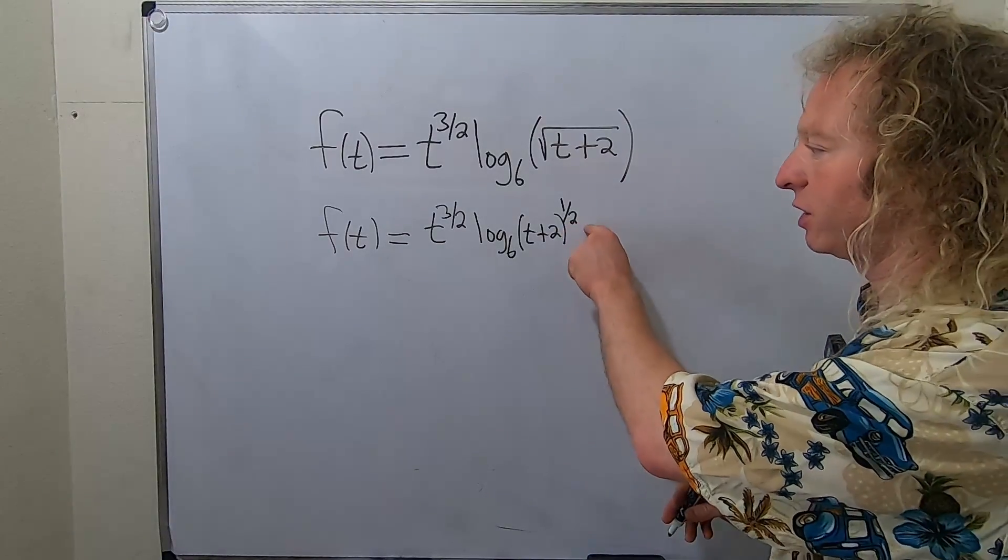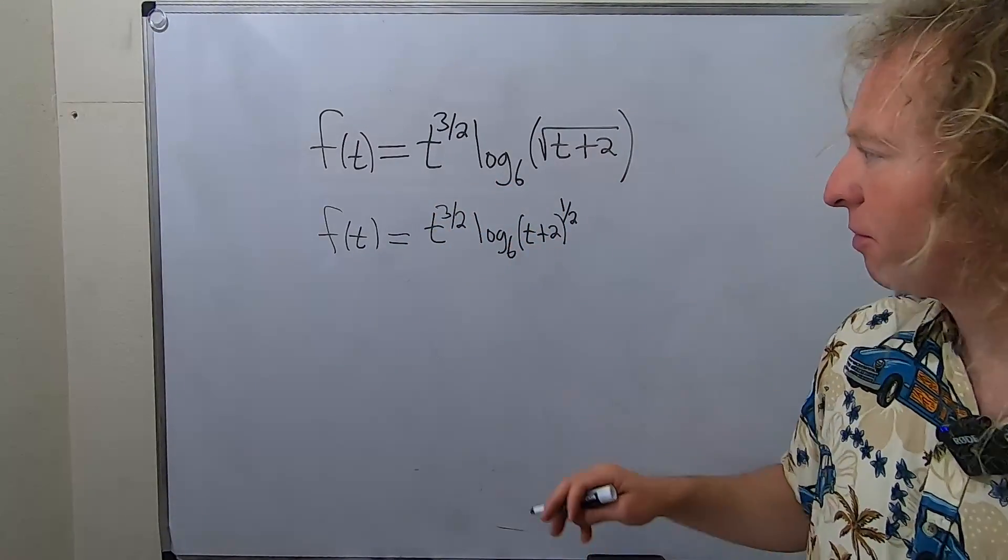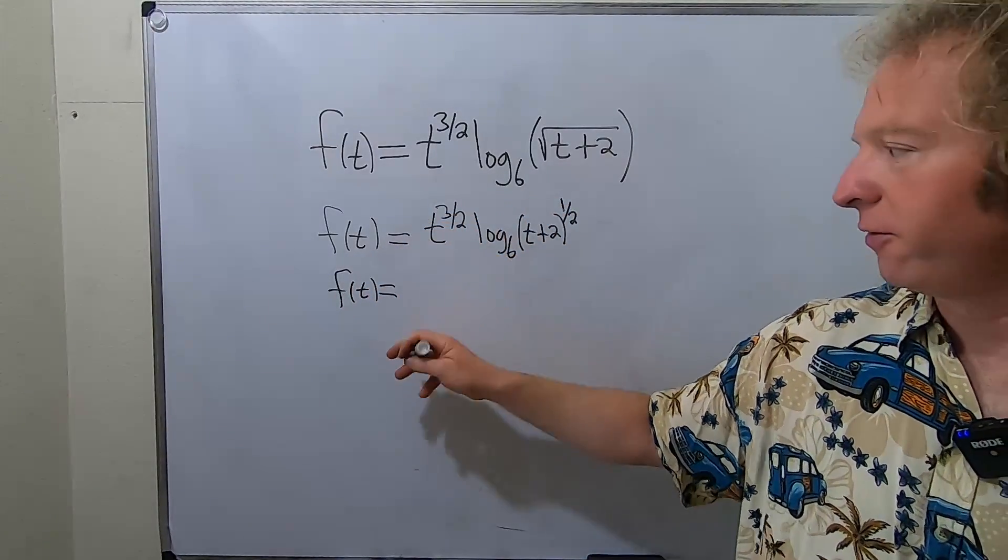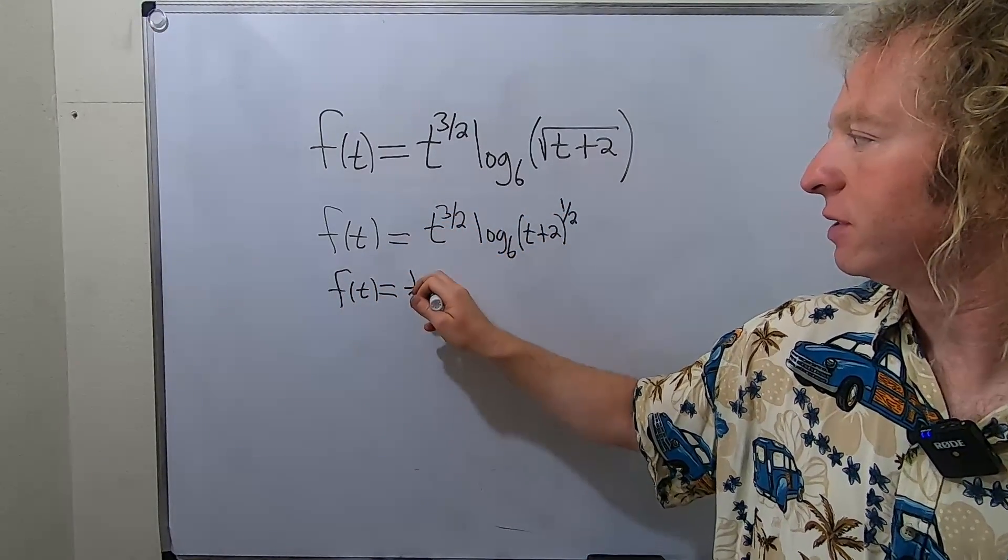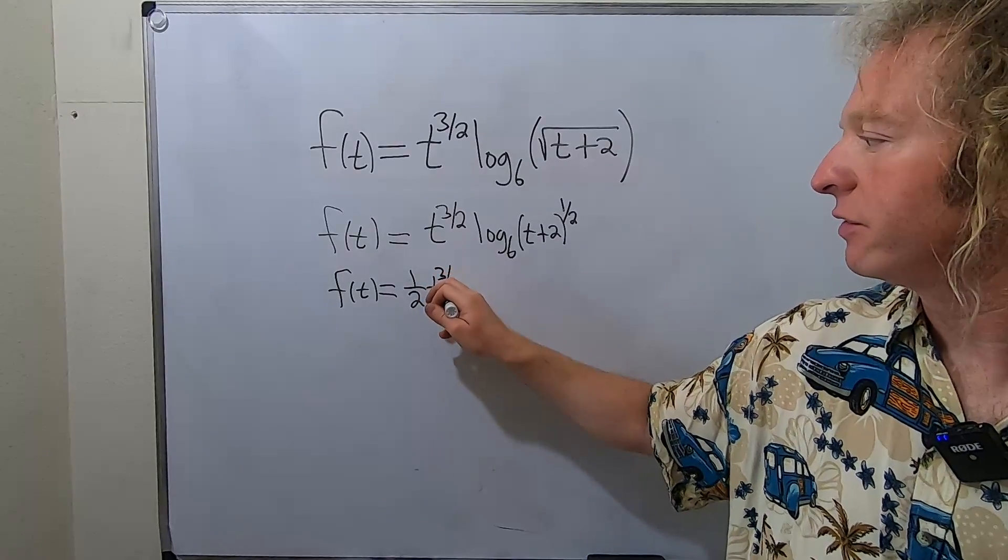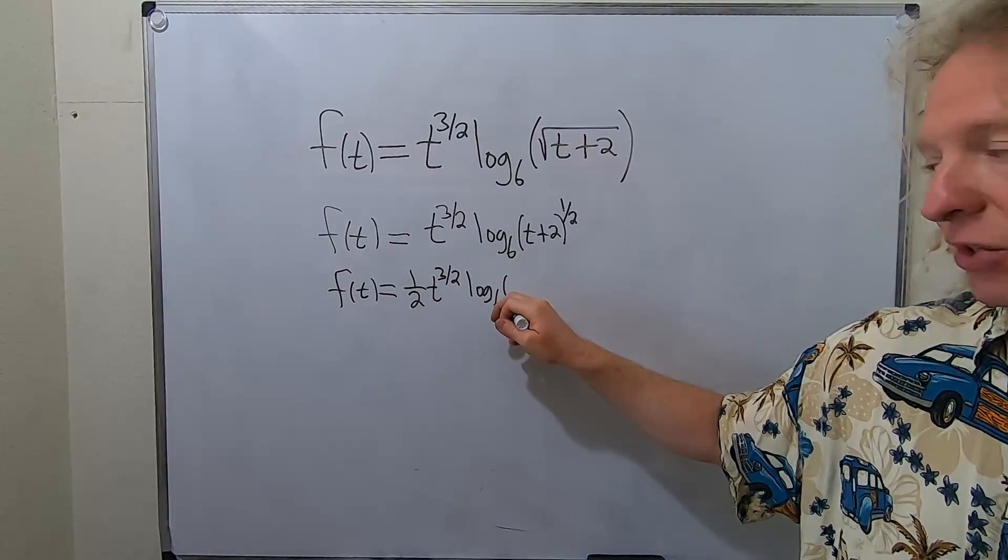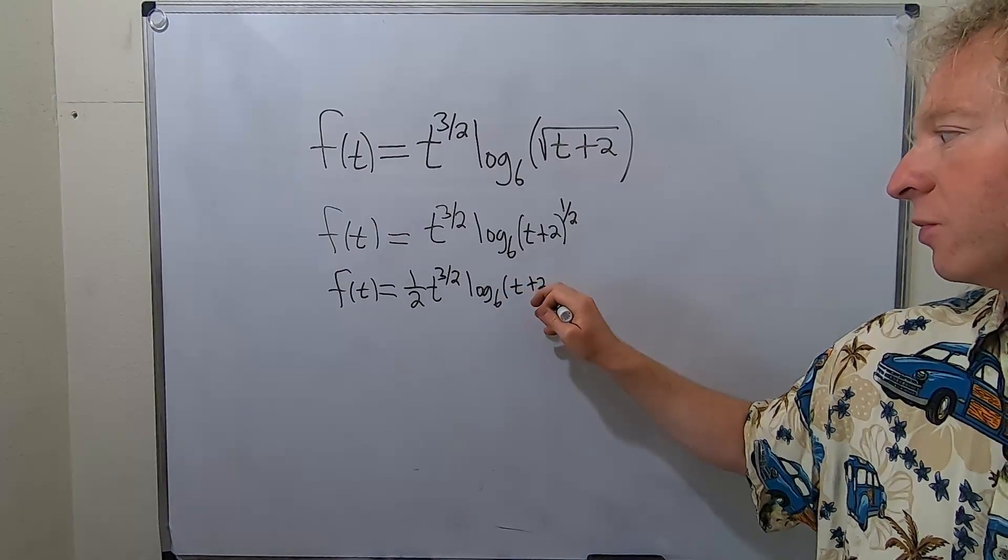So the next step we'll just take the 1 half and put it in the front. That's a property of logs. So we have f of t equals let's put the 1 half in the front. So we have 1 half t to the 3 halves log base 6 of t plus 2. So we're here now.